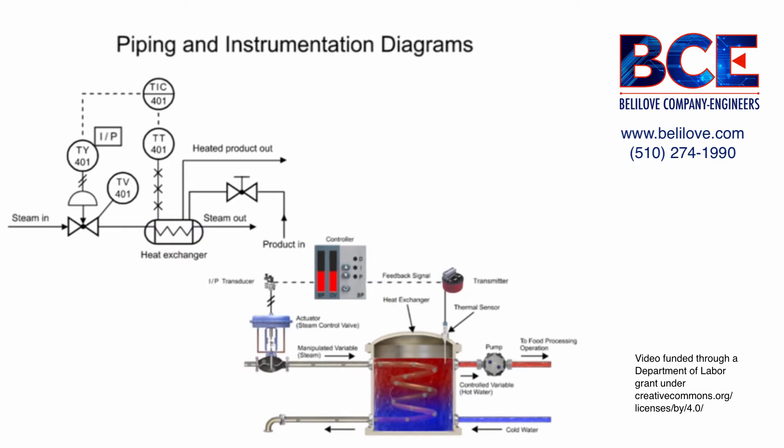To read the control loop, a series of steps are performed. Identification of the control loop is notated by the tag number 401 within the balloons.